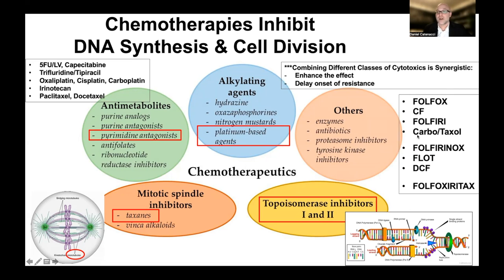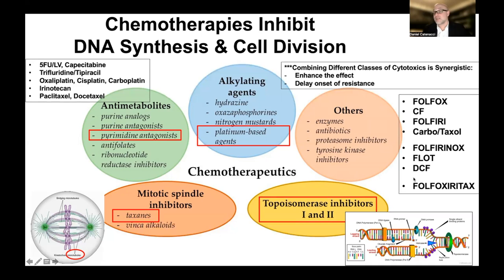Combination regimen acronyms are usually the first letters of the drugs. Examples include: FOLFOX (folinic acid, 5-FU, oxaliplatin), cisplatin and 5-FU, FOLFIRI (folinic acid, 5-FU, irinotecan), carbotaxel, FOLFIRINOX (folinic acid, 5-FU, irinotecan, oxaliplatin), and FLOT (5-FU, leucovorin, oxaliplatin, docetaxel - the common perioperative regimen). There is even a study combining all four classes together called FOLFOXIRI. As you add drugs together, they are expected to better control and shrink the cancer, but there is a heightened risk of side effects because normal cells need to divide as well.